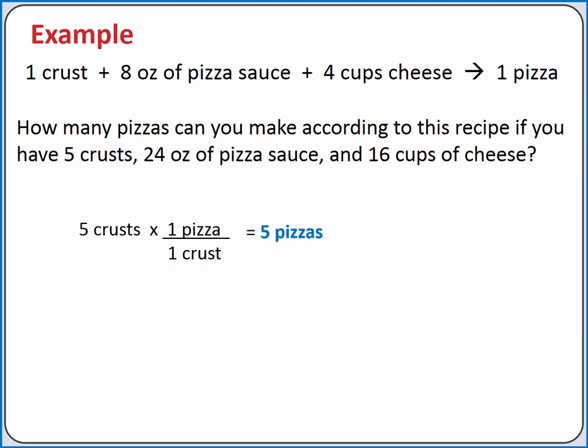We have 5 pizza crusts, and each pizza requires 1 pizza crust, so we have enough crust to make 5 pizzas. We have 24 ounces of pizza sauce, and each pizza requires 8 ounces of sauce, so we have enough sauce for 3 pizzas.